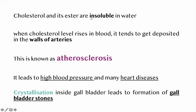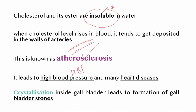Cholesterol and its esters are insoluble in water. When cholesterol level rises in the blood, it tends to be deposited in the arteries — the condition known as atherosclerosis — leading to high blood pressure and many other heart diseases. Crystallization inside the gallbladder leads to the formation of gallbladder stones.